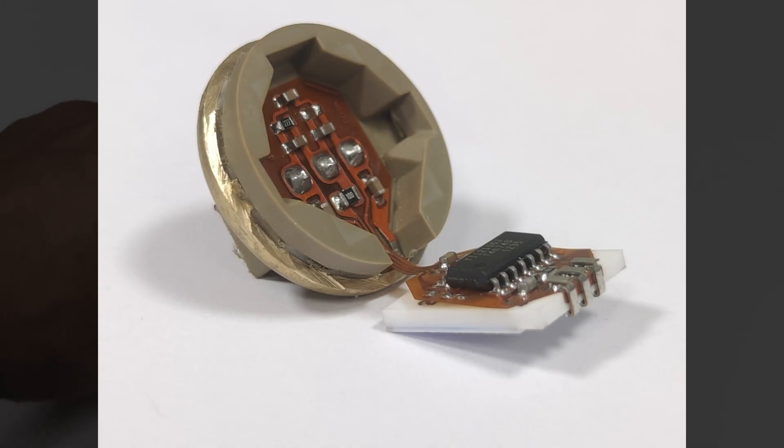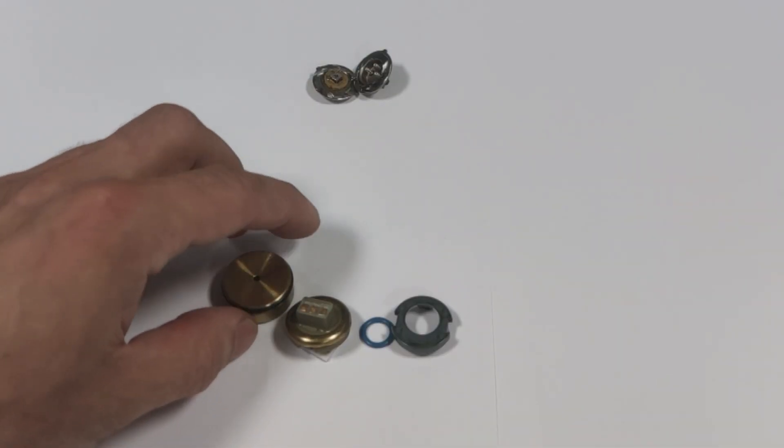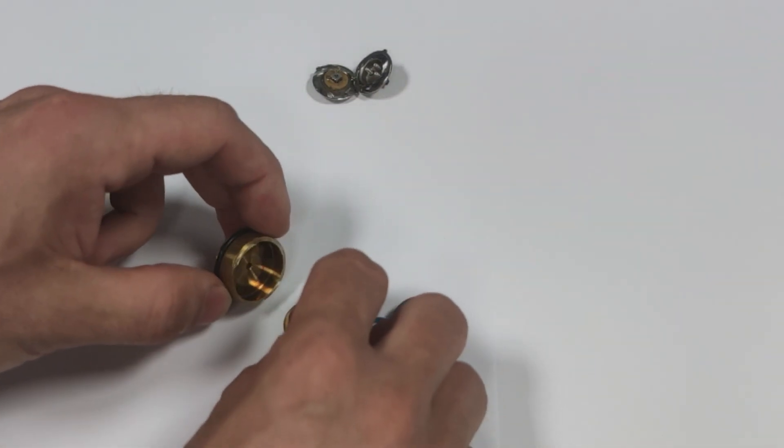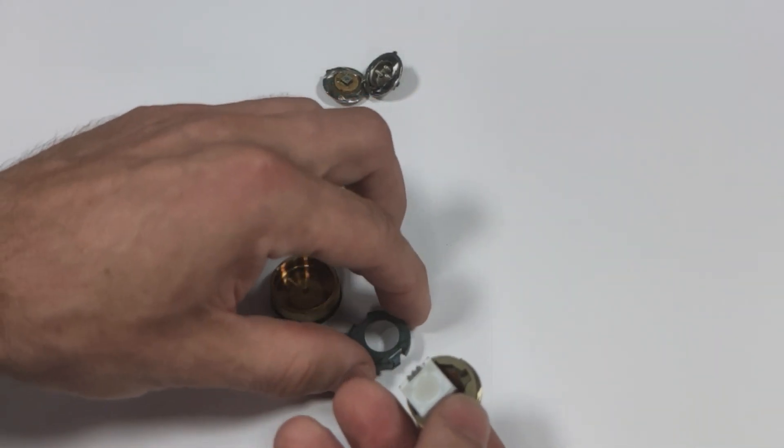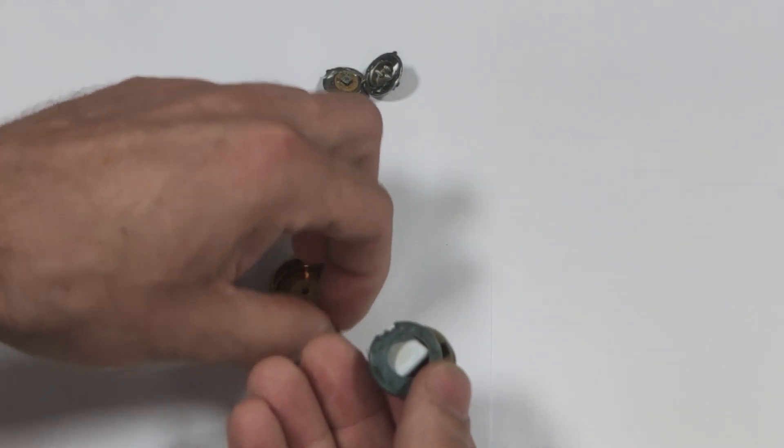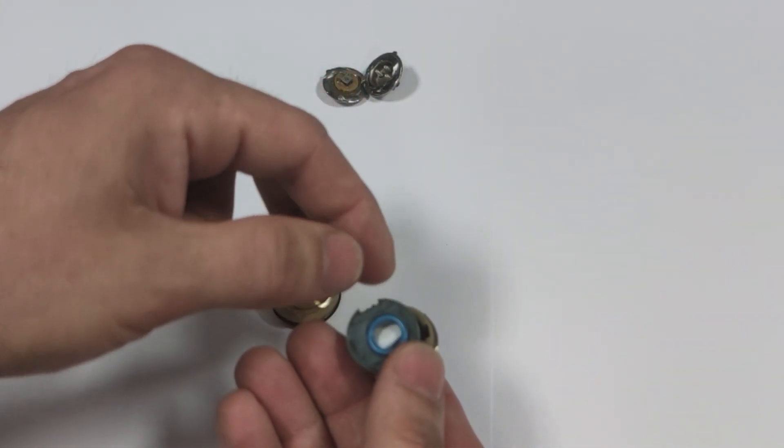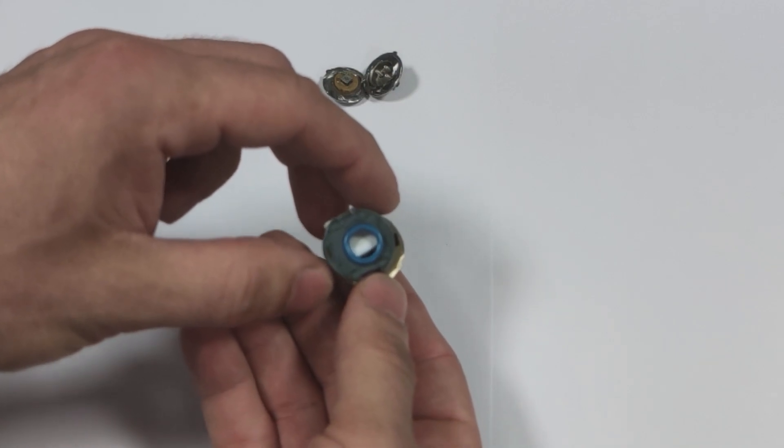Here we have a typical sensor used, for example, in the DQ250 gearbox. How is it constructed? All electronics are enclosed in a plastic basket sealed with an O-ring, which over time allows oil to pass through to the controller.